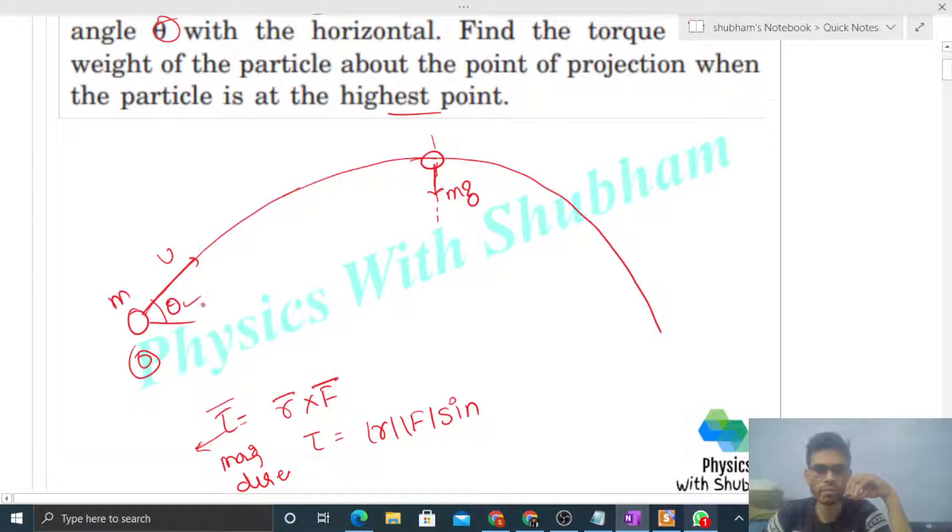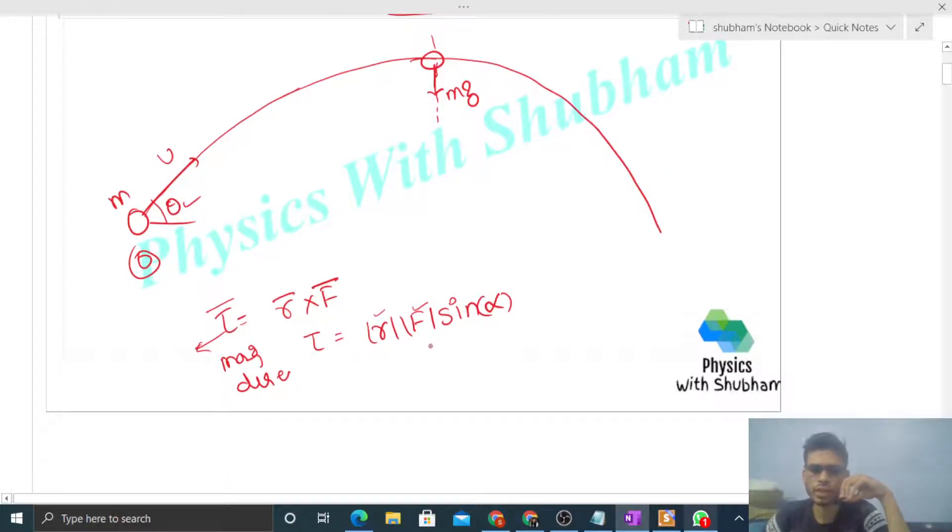We can't use θ because that's the angle of projection. So let's define a new variable α, which is the angle between r and F (the position vector and force). The force F is mg. Now let's talk about r sin α.